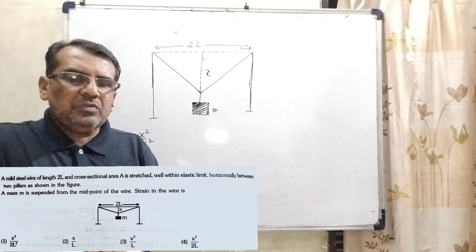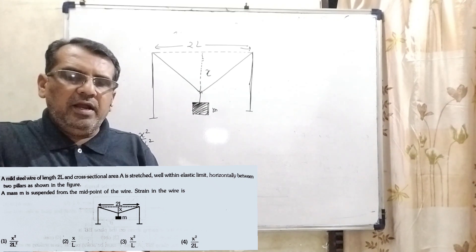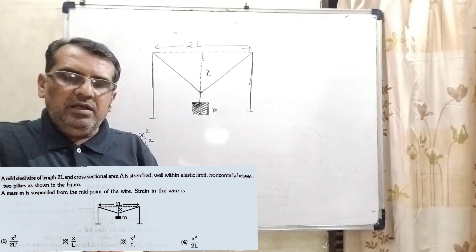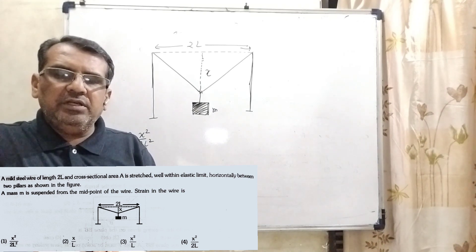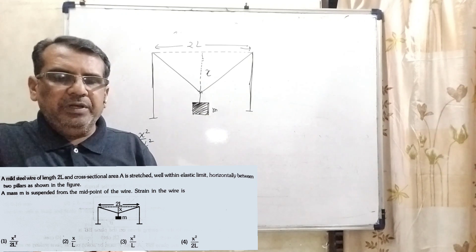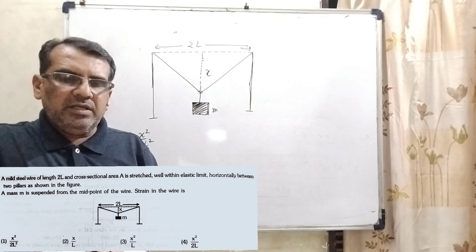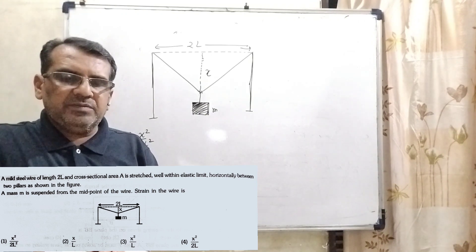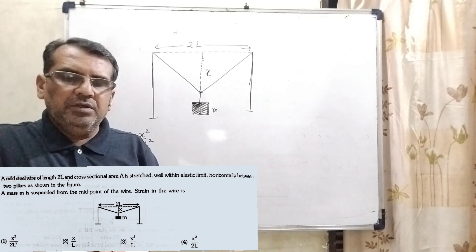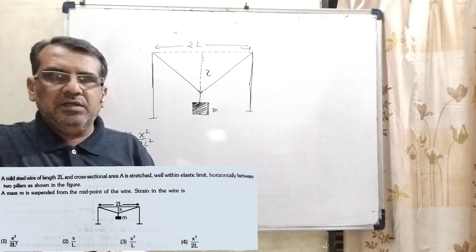Now here is the question. A mild steel wire of length 2L and cross-section area A is stretched well within elastic limit, horizontally between two pillars as shown. A mass M is suspended from the midpoint of the wire. Find the strain in the wire.